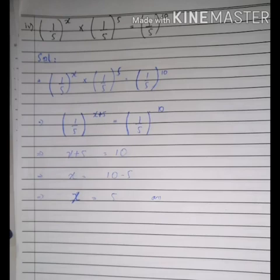Now we will write 1 upon 5 to power x multiplied by 1 upon 5 to power 5 equals 1 upon 5 to power 10. We have the same base, so we will add powers. 1 upon 5 to power x plus 5 equals 1 upon 5 to power 10. The base is the same, so x plus 5 equals 10.